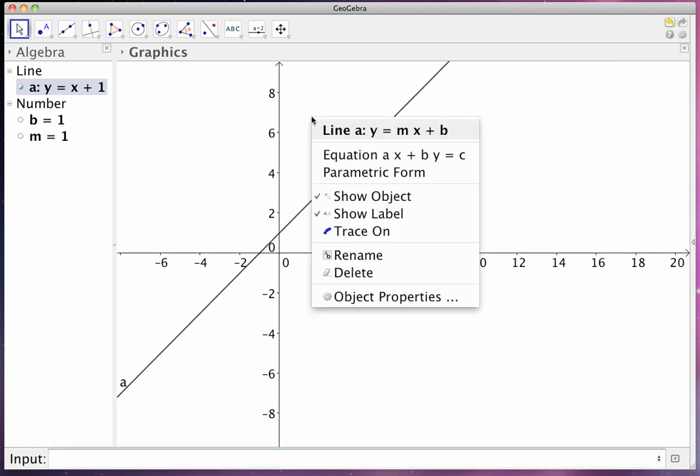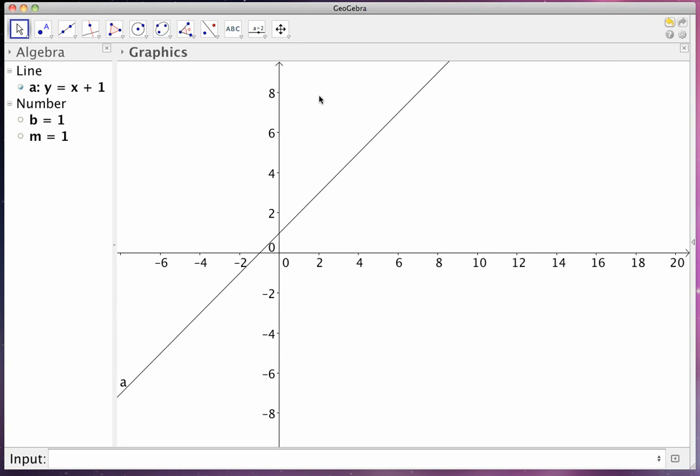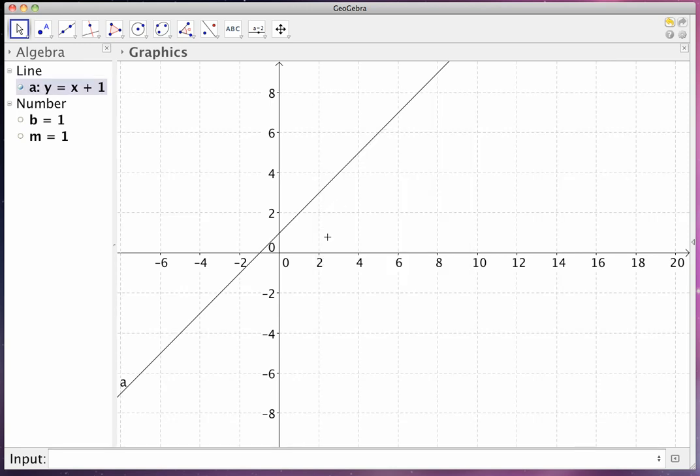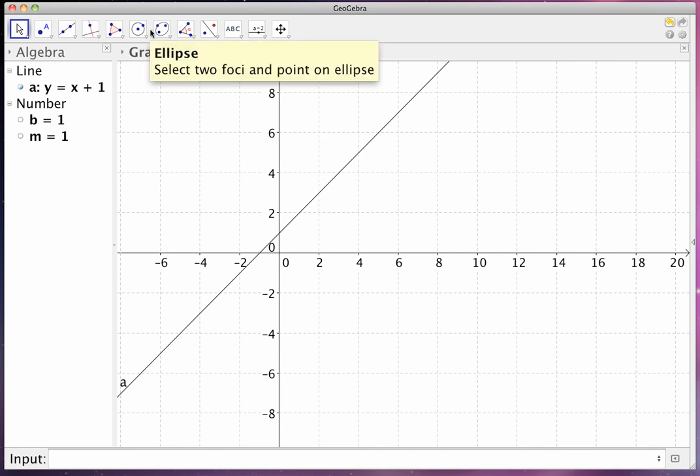Also what you can do is you can right-click anywhere on the grid and create a grid. That way the students can actually count up the rise over the run, right? And it can help them calculate slope visually. So that's something else I would recommend.